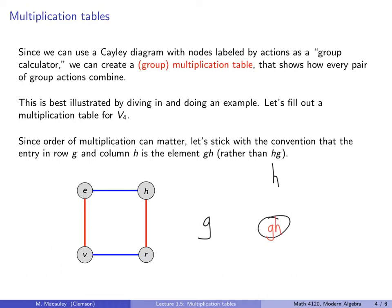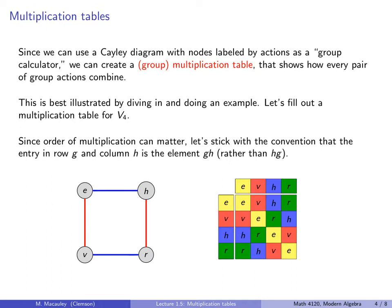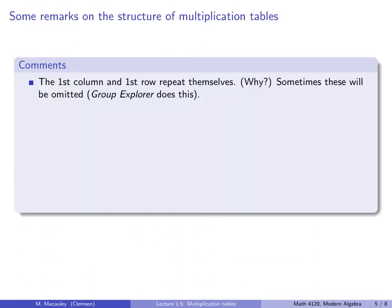Here's the multiplication table. You can see we have EVHR here and EVHR here. If you want to take V times H, you take V here times H and you go to this element, and that's R. Here you can right away see how to multiply any two elements in this group.